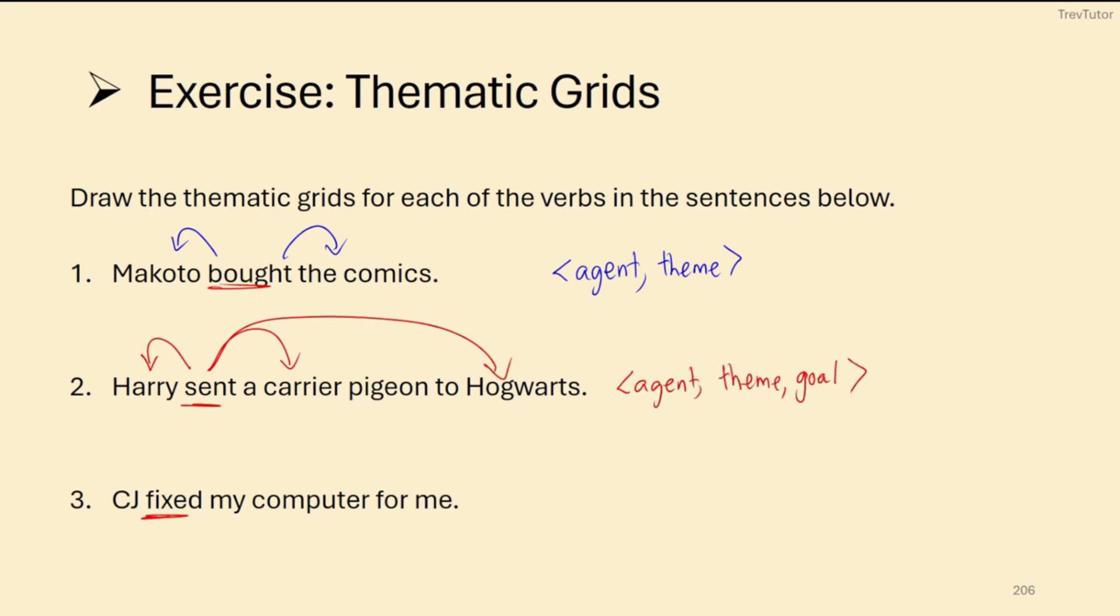Finally, CJ fixed my computer for me. CJ would be an agent in this case, is fixing something, which is a theme. And who's it for? It's for me. So this is a benefactive. So we would have an agent, a theme, and then we'd have the benefactive after that. So you'll notice that a lot of transitive verbs in English are agent-theme or experiencer-theme. That's just generally how verbs select their requirements for subjects and objects.